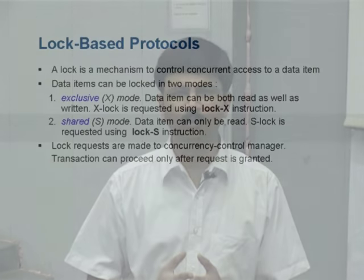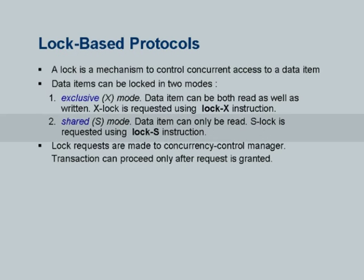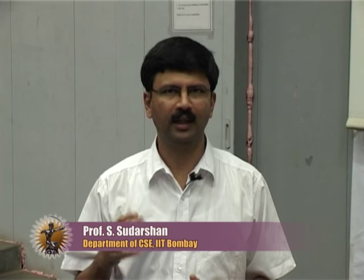Exclusive means when you have the lock on the data item, nobody else can get a lock. Shared means when you get it, somebody else can get a shared lock, but nobody can get an exclusive lock — so it allows sharing. Exclusive locks correspond to write operations; shared locks correspond to read operations. When you read, you do not care if somebody else also reads. But if somebody is trying to write at the same time that you are trying to read, bad things can happen. To read, you get a shared lock, which will allow other readers but not other writers.